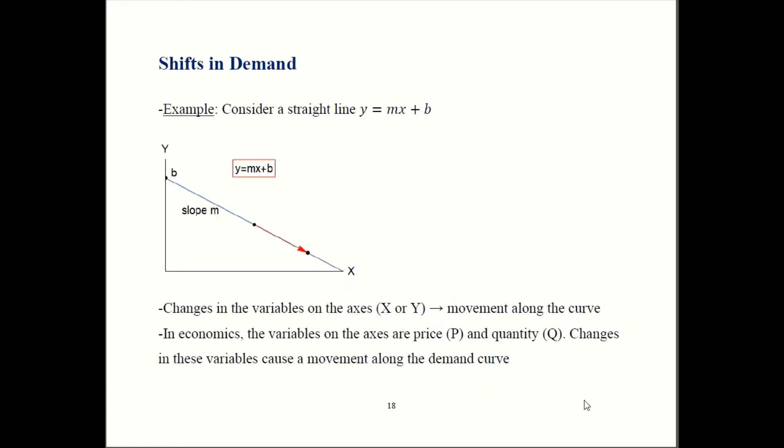To drive home what factors give you shifts versus movements along, I found a nice example in another textbook that I'll share with you. Let's go back to some basic math where you have a straight line. The line has the equation y equals mx plus b. B is the intercept, so that's where the line crosses the y-axis. The slope is m. Slope, of course, is rise over run.